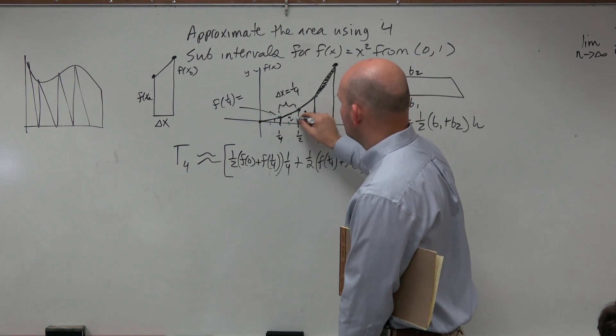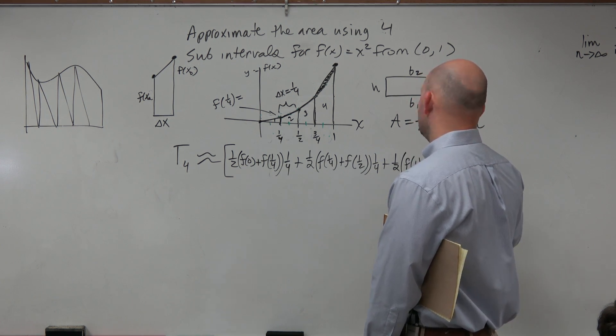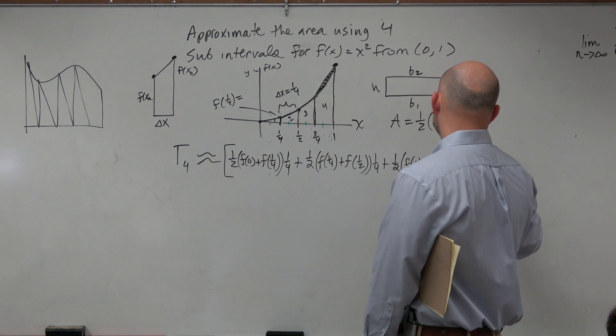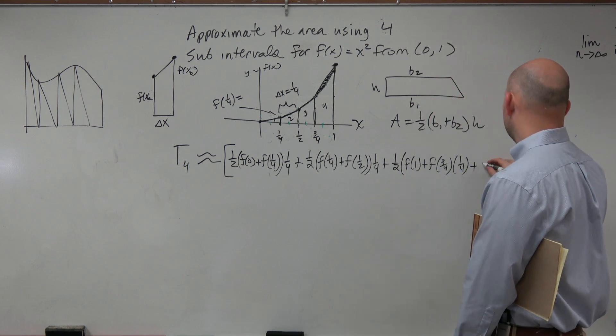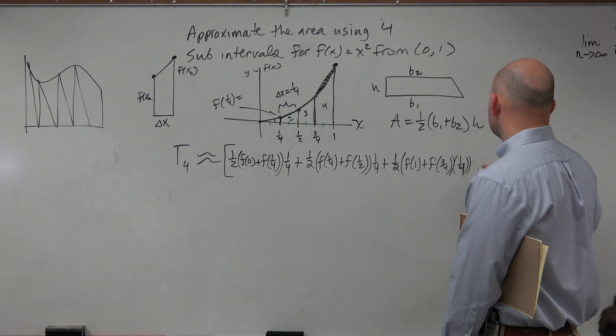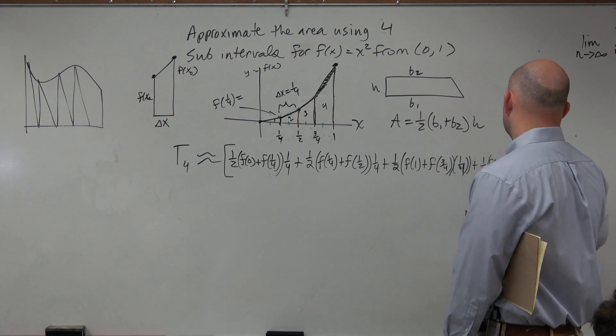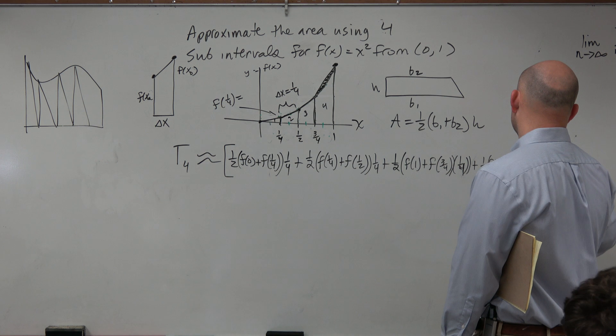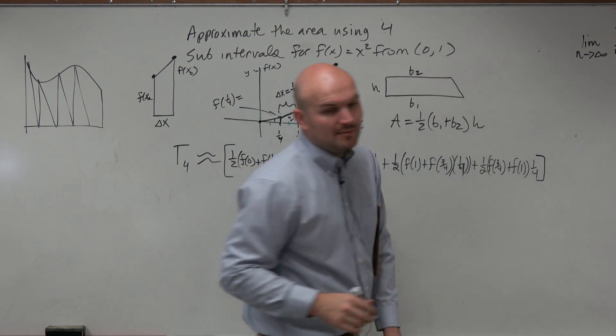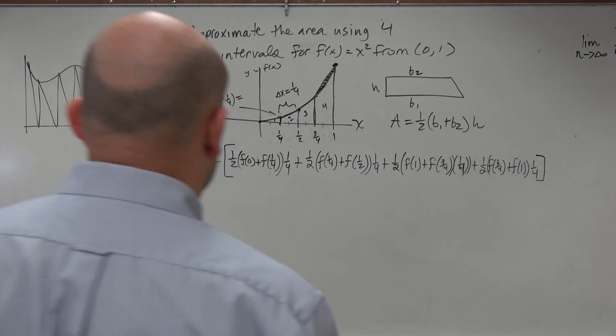Let's do the third one. So the third one is going to be 1/2 times f of 3/4 plus f of 1 times 1/4. It's kind of a lot going on, isn't it? Now I'm writing all this out so you guys can see, and I will show you guys a simplified way to look at this.